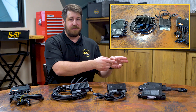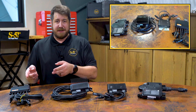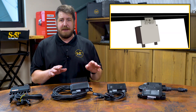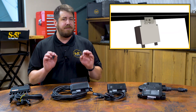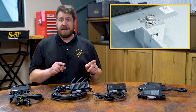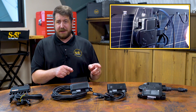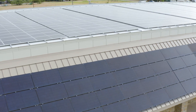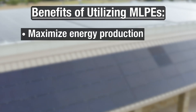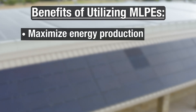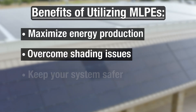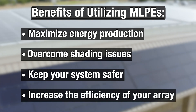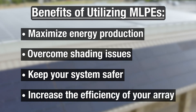Whether using microinverters, optimizers, or rapid shutdown devices, S5 clamps, brackets, and MLPE mount provide convenient attachment points for integrating these power electronics into your system. By incorporating these technologies into your PV array, you can maximize energy production, overcome shading issues, keep your system safer, and increase the overall efficiency of your solar array.